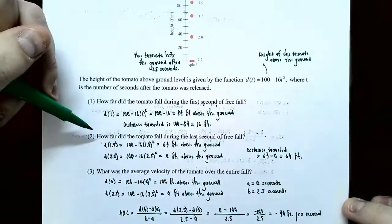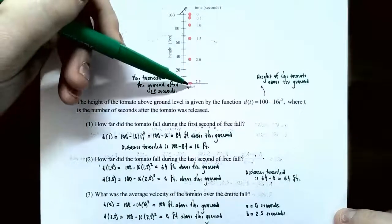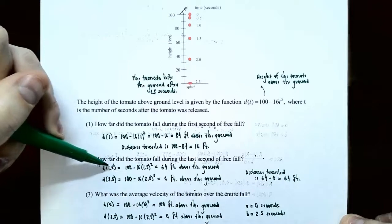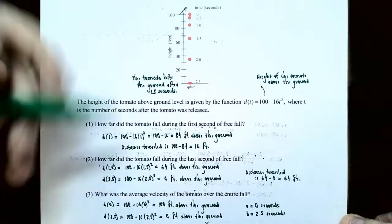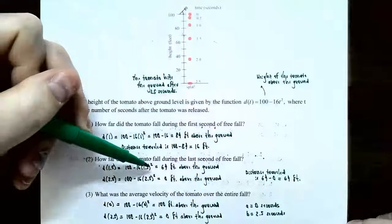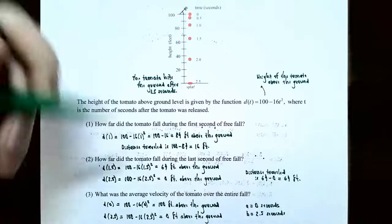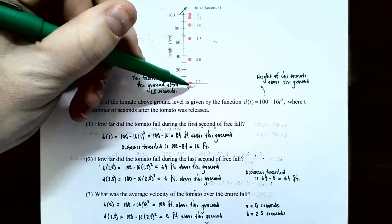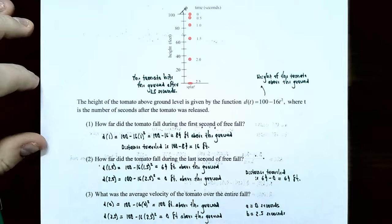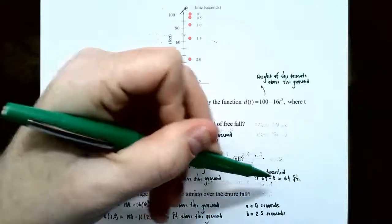Part two: how far did the tomato fall during the last second of free fall? From the figure, the tomato hits the ground after 2.5 seconds, so the last second is between 1.5 and 2.5 seconds. After 1.5 seconds, the height is 100 minus 16 times 1.5 squared — still 64 feet above ground. After 2.5 seconds the height is zero. So the tomato traveled 64 subtract zero, or 64 feet, during that last second.